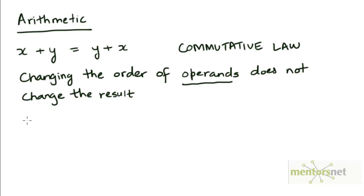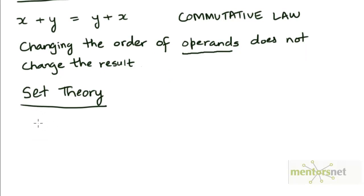In the context of set theory, we have commutative laws for the operations of union and intersection because A union B is the same as B union A, and A intersection B is the same as B intersection A.